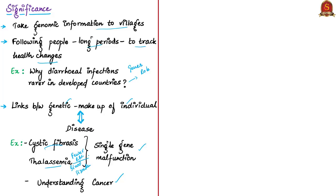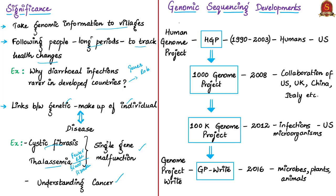In this context, it becomes important to understand genome sequencing developments. The first was the Human Genome Project (HGP) — an international scientific research project with the goal of determining the sequence of nucleotide base pairs that make up human DNA. It was started by the United States in 1990 and completed in 2003, when the first human genome was sequenced. Next was the Thousand Genomes Project, set up to map genetic variations in humans across the world, sequencing around 1,092 individuals from 14 different populations. It was started in 2008 by the collaboration of USA, United Kingdom, China, Italy, and others.